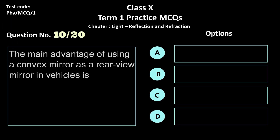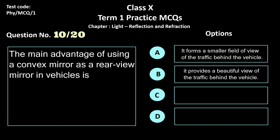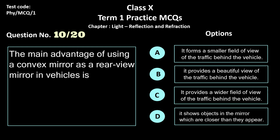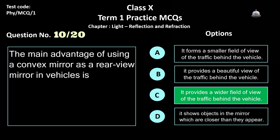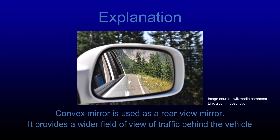Question 10. The main advantage of using a convex mirror as a rear view mirror in a vehicle is — options: a) it forms a smaller field of view, b) it provides a beautiful view, c) it provides a wider field of view of the traffic behind the vehicle, and d) it shows objects closer than they appear. The correct answer is option c. A convex mirror provides a wider field of view, which is why it is used as a rear view mirror.